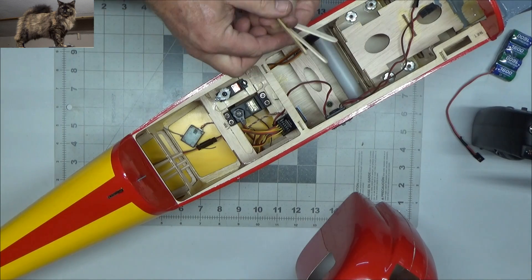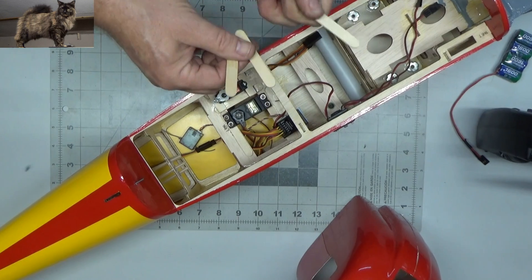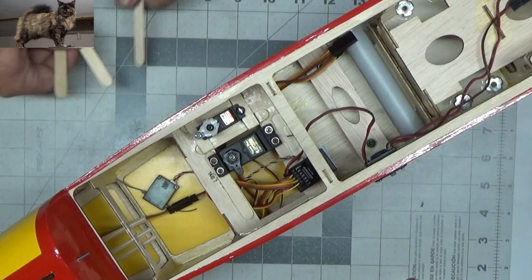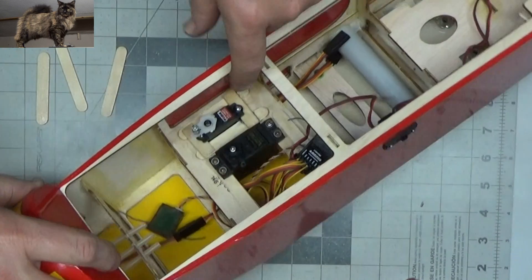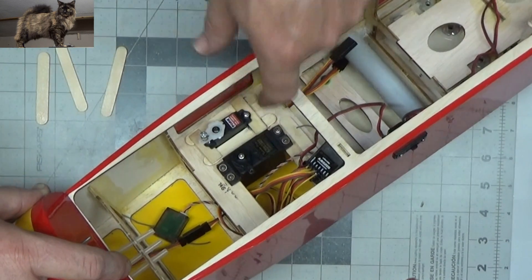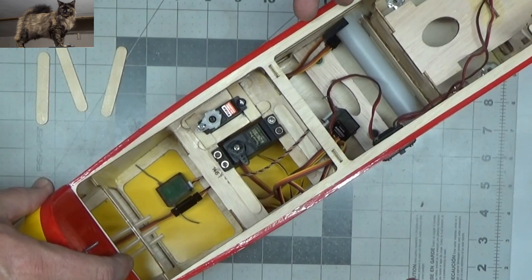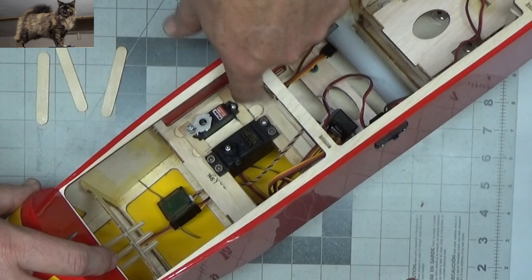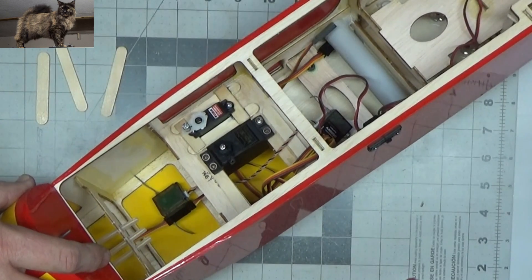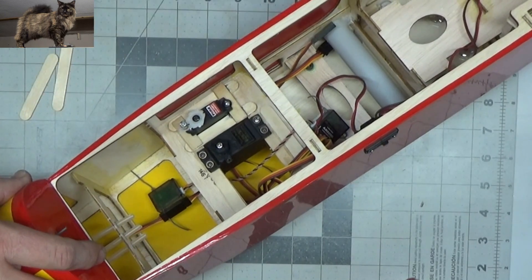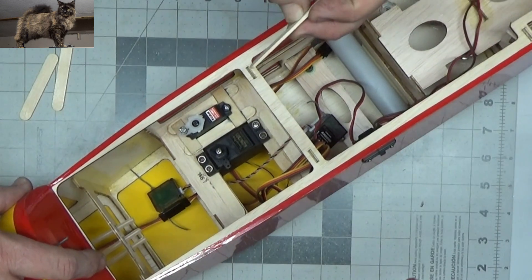I want to show you some things that I did here. These little craft sticks are wonderful rails for servos. Because this cutout here was set up for full size servos, I kind of had to make my little box for this mini servo. So I did that with these craft sticks.